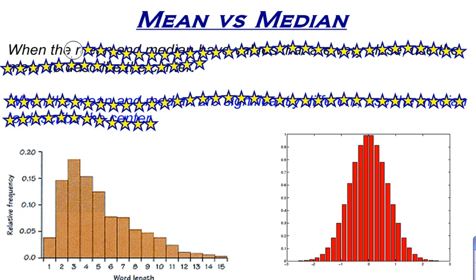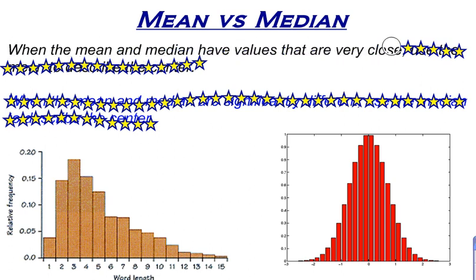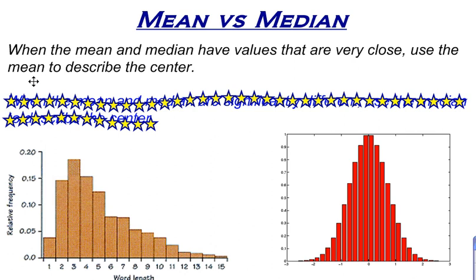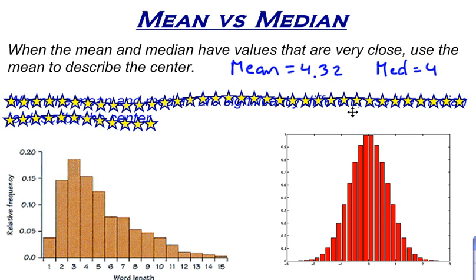Well, there are a couple of things you need to keep in mind. If our mean and our median have values that are very close to each other, then we're going to use the mean to describe the center. We found that the mean was equal to 4.32 and the median was equal to 4. I feel like these two values are close to each other, so I would use the mean to describe the center of our distribution.